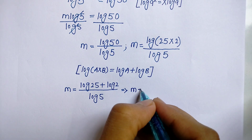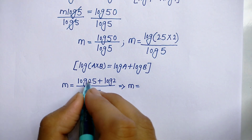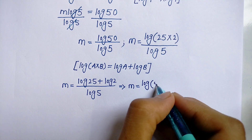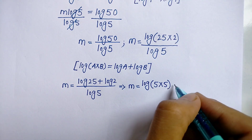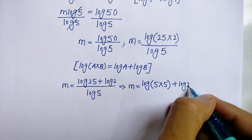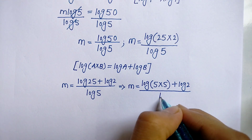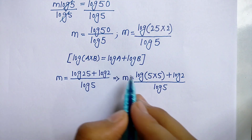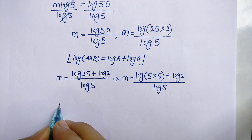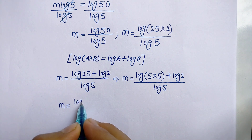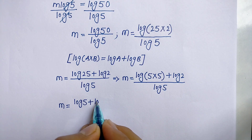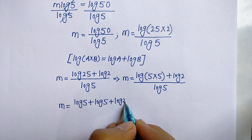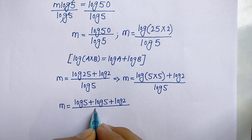Now we can write log 25 as log of 5 times 5, plus log 2, all upon log 5. Again applying the product rule, we get m is equal to log 5 plus log 5 plus log 2, all upon log 5.